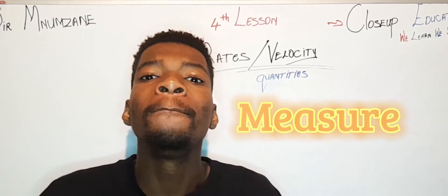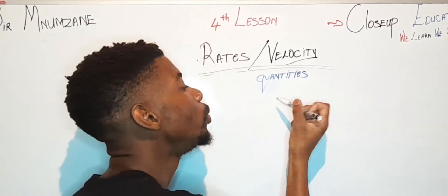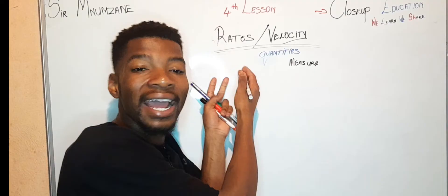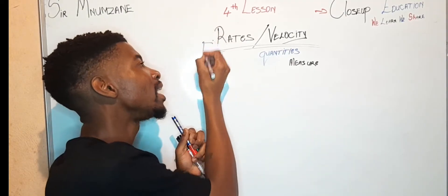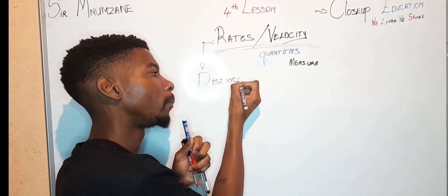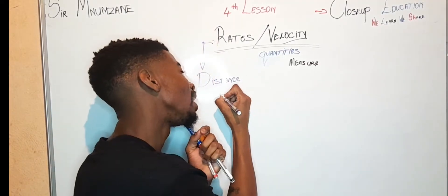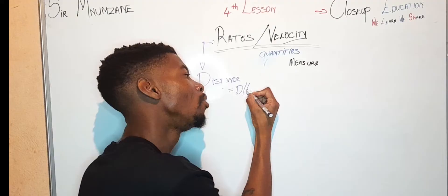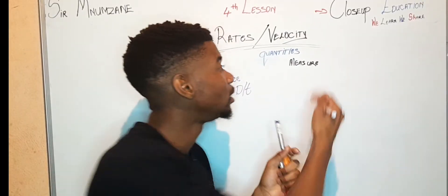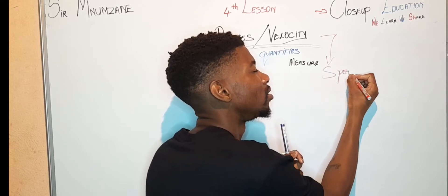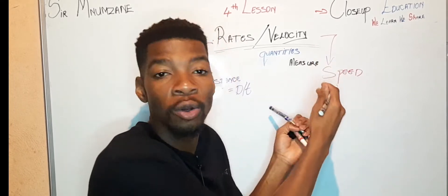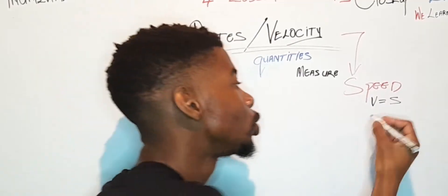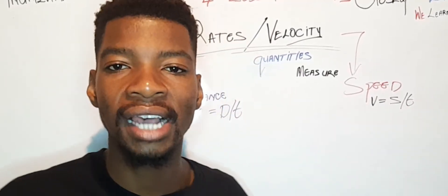They are both quantities which measure different things. Rate measures distance — its formula is: rate equals distance over the change in time. Velocity measures speed — its formula is: velocity equals speed over the change in time.